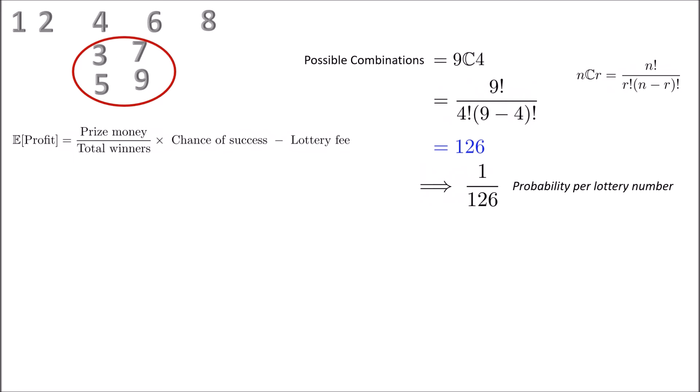So the expected profit is given by the total prize money divided by the total number of winners multiplied by the chance of succeeding, i.e., my number being chosen, and subtracting the lottery fee, which is just the one pound entrance fee to actually enter the competition.